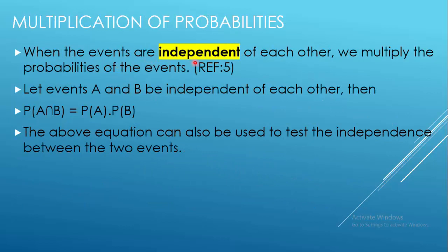When the events are independent of each other, we multiply the probabilities of the events. So if events A and B are independent, then P(A intersection B) is simply P(A) multiplied by P(B). This equation can also be used to test independence between two events.